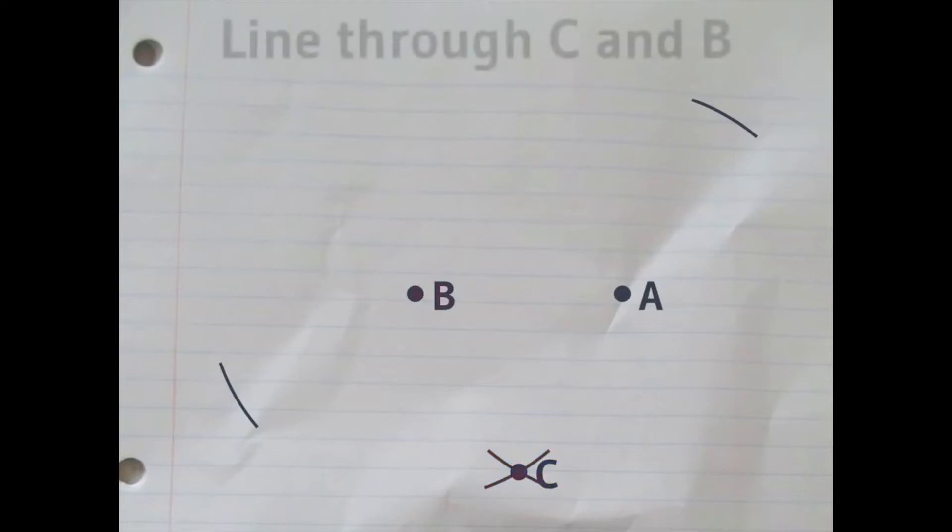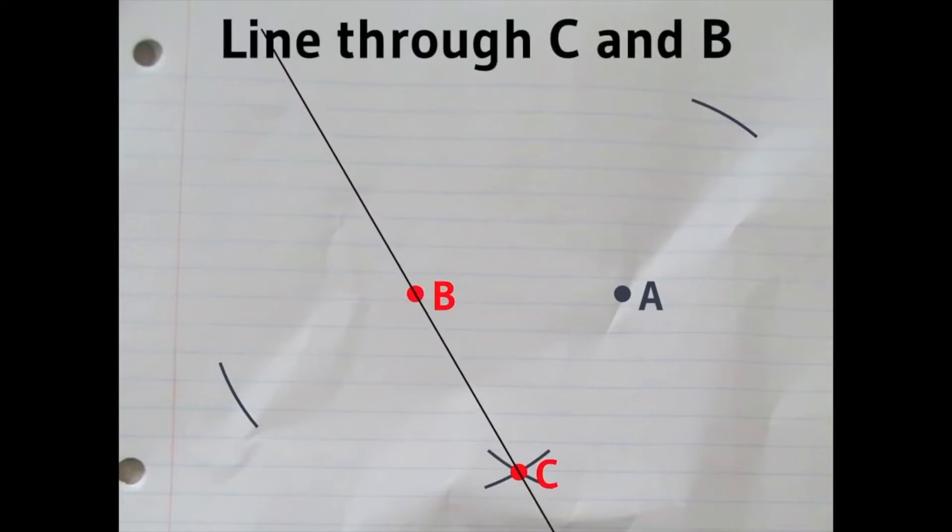Next, you get your ruler. You draw a line through B and C. Extend the line out just a bit past B and draw that part of the line.